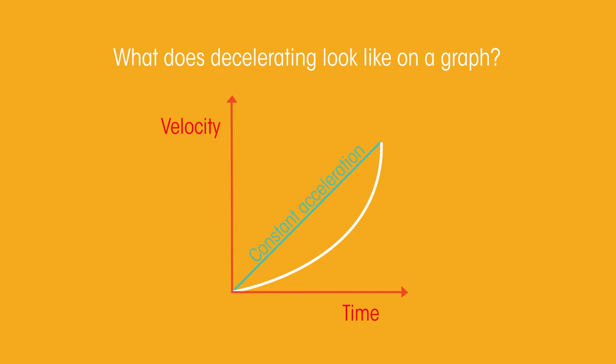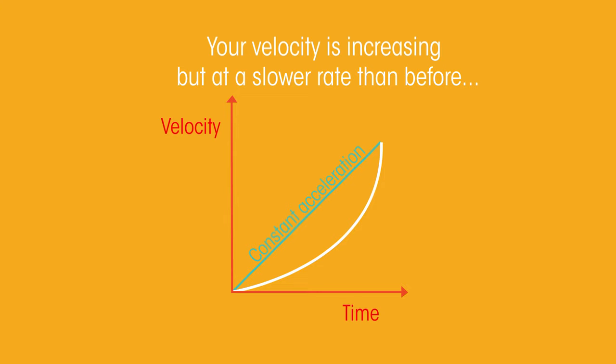What do you think this would look like on a graph? So your velocity is increasing but at a slower rate than before. Pause the video and have a think.